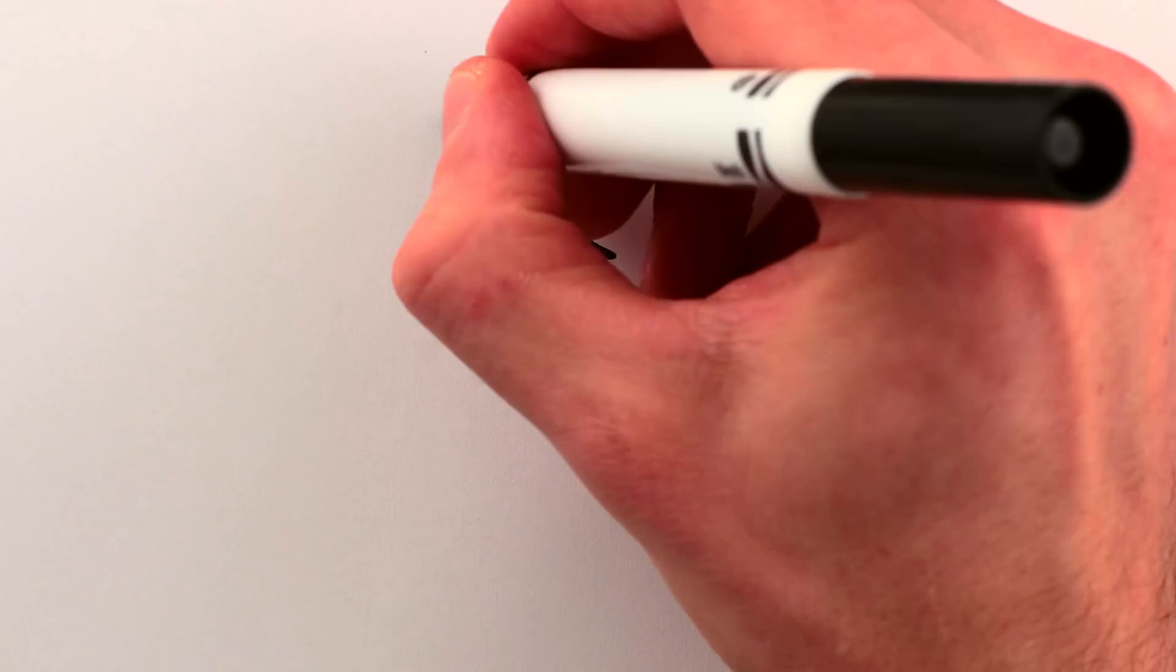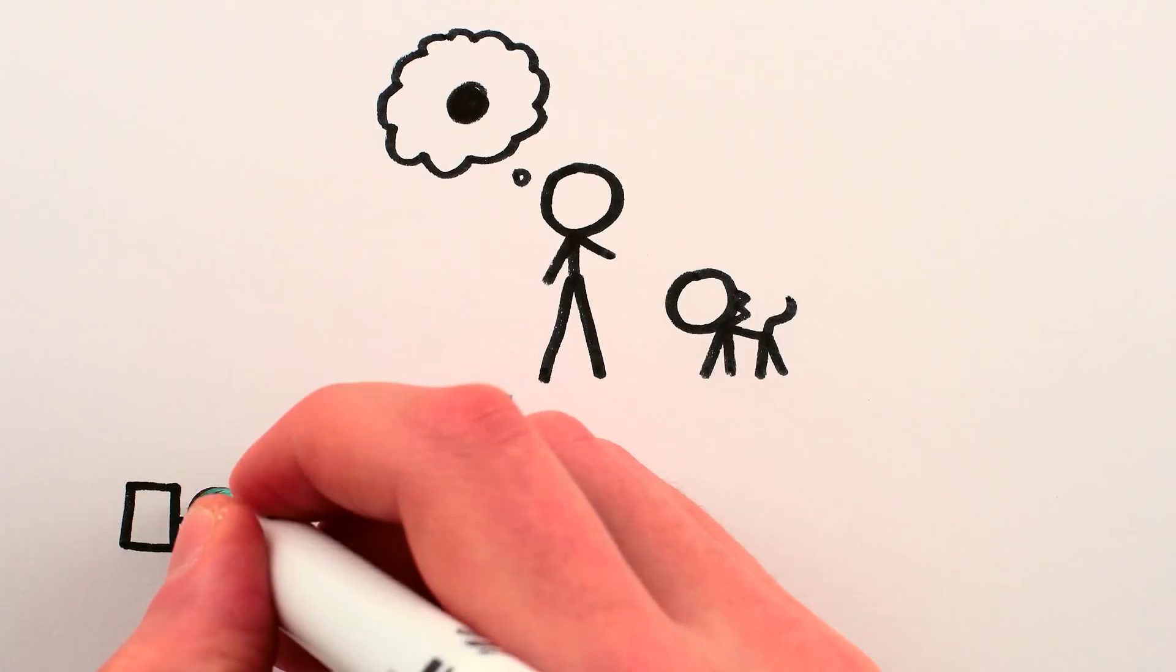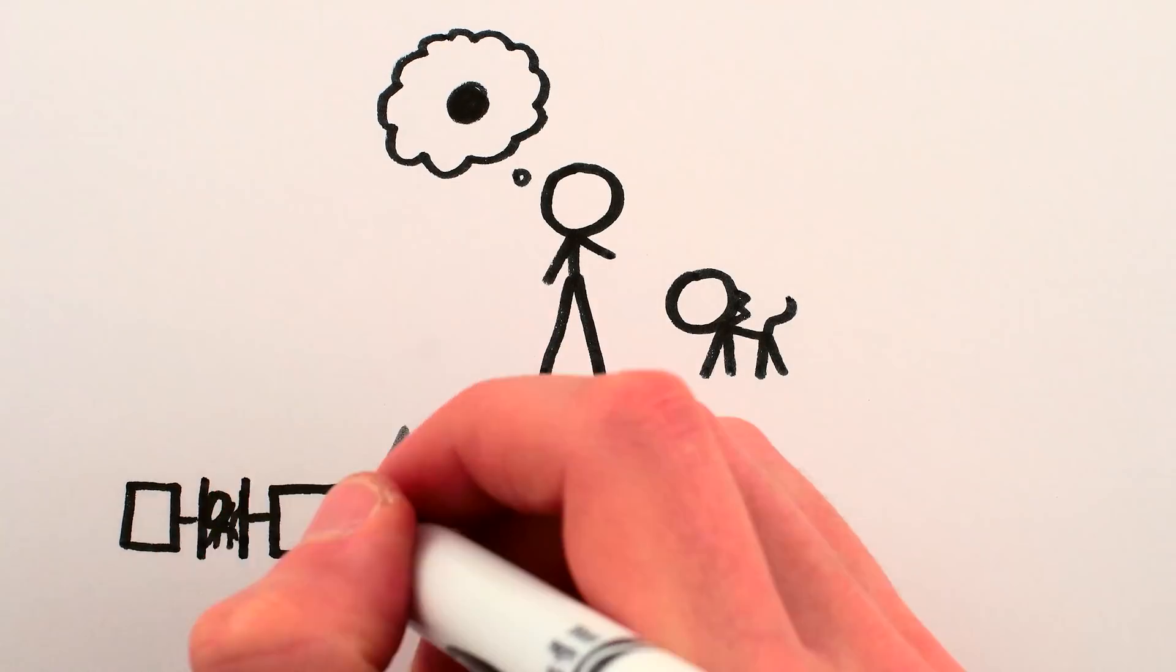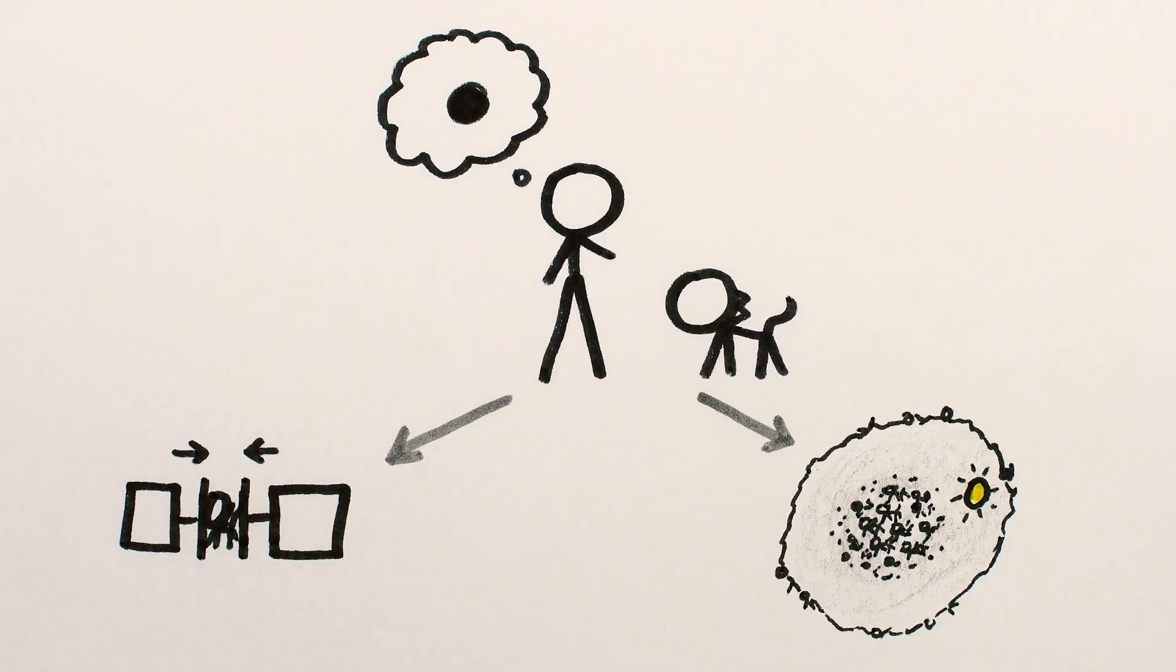So to recap, if you want to turn your cat into a black hole, you have two options. Either compress it down to a trillionth the size of an atomic nucleus, or cover it in a pile of other cats that reaches beyond the Sun.